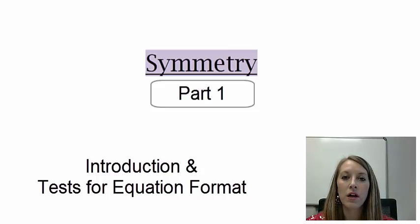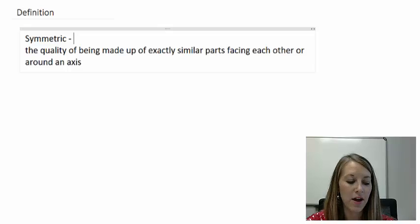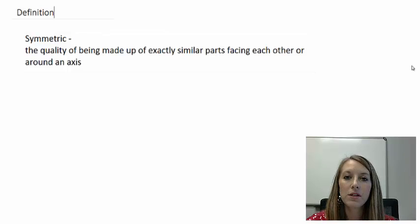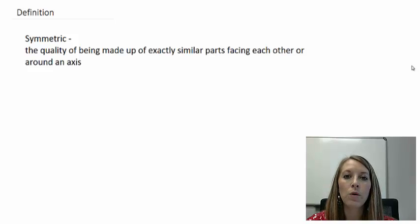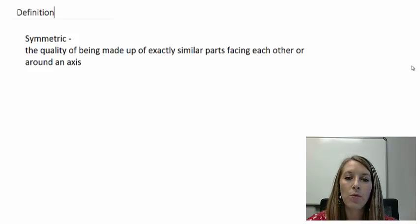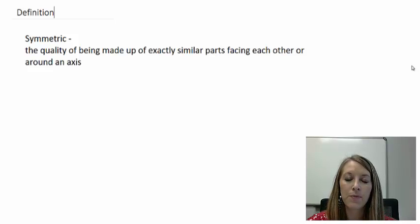The last thing we're going to go over in this section is symmetry. For something to be symmetric, that means it matches on both sides. If I were to fold it over a line, it would match on both sides of the line. There's also another way for it to be symmetric, especially in algebra, which is if we can rotate it around an axis. Let's look at the three different ways that symmetry is defined.